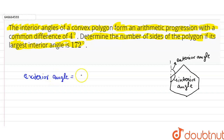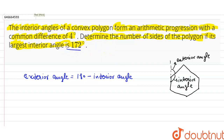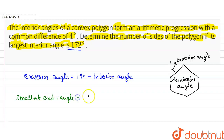The exterior angle is equal to 180 degrees minus the interior angle. Since the largest interior angle is 172 degrees, the exterior angle corresponding to that will be the smallest. So our smallest exterior angle is 180 minus 172, which equals 8 degrees.